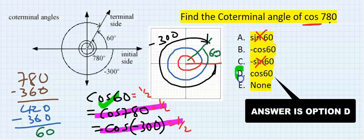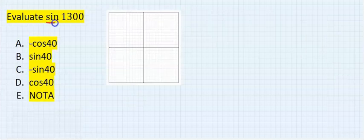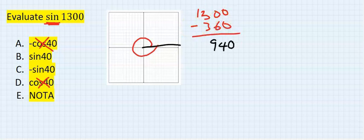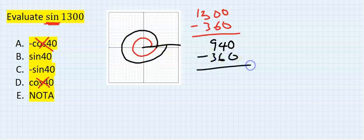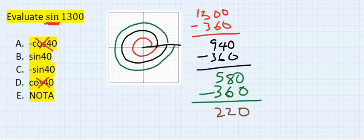Now evaluate sin 1300. Because I have sine, I eliminate options A and D which have cosine, and I consider just B and C. Starting from the reference line: 1300 minus 360 — still greater than 360. Subtract 360 again, still greater than 360. Subtract 360 a third time — now less than 360 but greater than 180, so I subtract from 180.